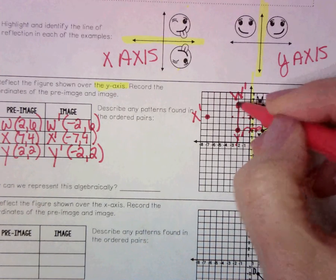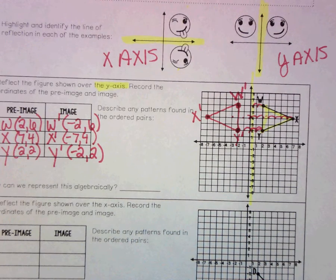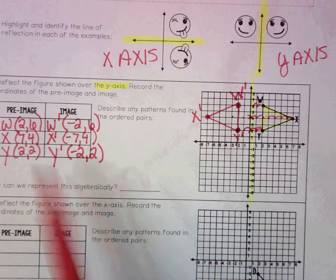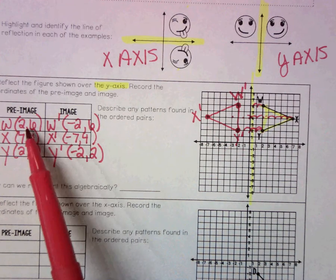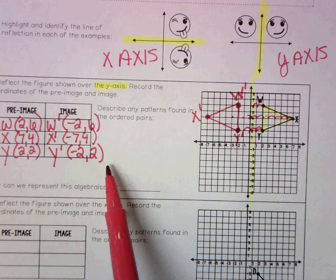Look at our picture. Do you have a nice reflection? Hopefully you do. So now it says describe any patterns found in the ordered pairs. What do you notice? How are your ordered pairs changing?